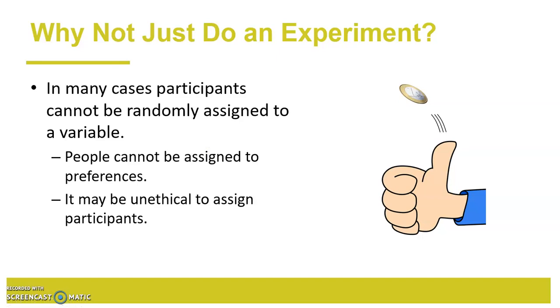Now, we've talked about before, experiments are really the gold standard for establishing causality. Why bother doing all this cross-lag stuff if you can just do an experiment? Well, there are plenty of questions that you can't answer with experiments, plenty of variables that you can't just randomly assign a participant to.